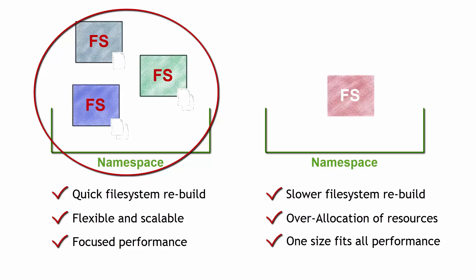What we're talking about today is the difference when it comes to network attached storage. We don't need to be a file system or namespace specialist to understand this. Your network attached storage should always have the ability to have multiple file systems within its namespace. The flip side of that is a single file system with one namespace.